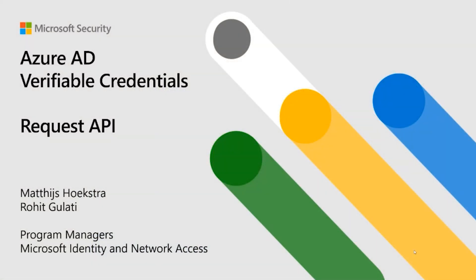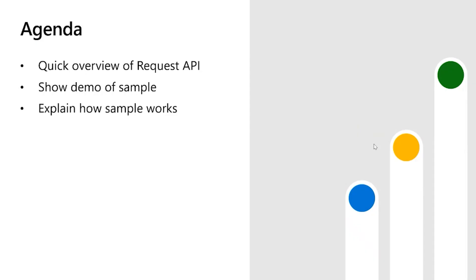Let's talk about the Azure AD verifiable credential service request API. Here's a sneak preview of the agenda. We'll do a quick overview of the request API service and explain the goals for it. We'll show you a demo of our .NET sample, and Matthijs will also show you a set of sequence diagrams so that you understand how the sample works — the issuer flow and the verifier flow. At the end, we'll do a demo with Postman.